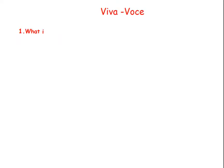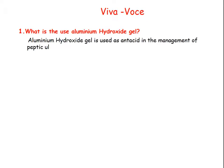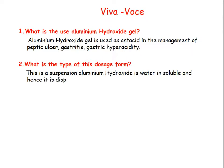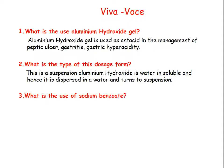Now we will see questions asked in Viva and Synopsis. Q1: What is the use of Aluminium Hydroxide Gel? — It is used as an antacid in management of peptic ulcer, gastritis, and gastric hyperacidity. Q2: What is the type of this dosage form? — It is a suspension dosage form, as aluminium hydroxide is insoluble and hence dispersed into water, turning into a suspension.